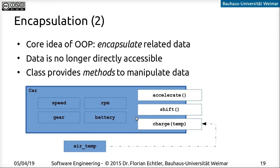The methods will modify the internal variables, but other methods that are not part of the class don't have access to these values anymore. A completely unrelated method somewhere outside the class cannot — even by accident — modify data that's encapsulated inside the class. If the methods need data from outside, we pass it as a parameter. The fundamental idea of encapsulation is that all related data is encapsulated inside the class, and only the methods provide a way to access that data from outside.